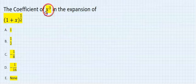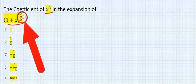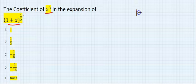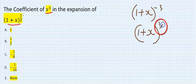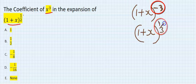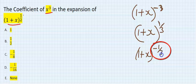Find the coefficient of x to the power of 3 in this expansion. Whenever the power here is negative, like 1 plus x to the power of minus 3, or something like 1 plus x to the power of 1 over 3, once you start getting a negative or a fraction in an expansion, the formula will actually change.